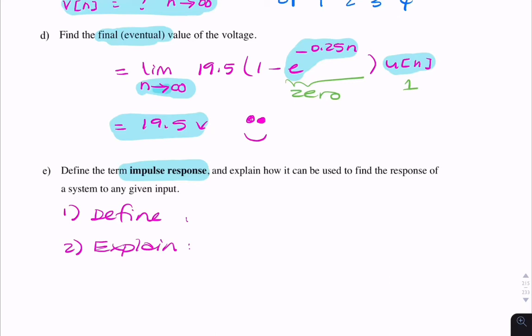For the definition, you can say the impulse response represents the output of a system when subjected to a unit impulse at the input. For the explanation, it's enough to say the output of a system to any arbitrary input signal X of T can be found by finding the convolution of the impulse response H of T with the input X of T.